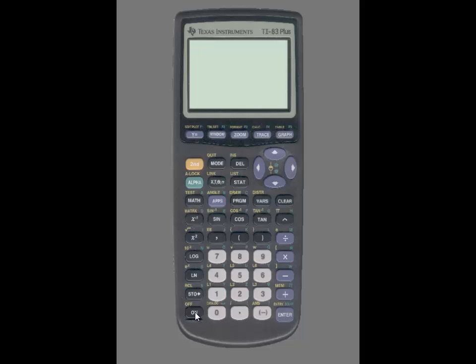For the first example, we want to find the probability that Z is less than 0.75.